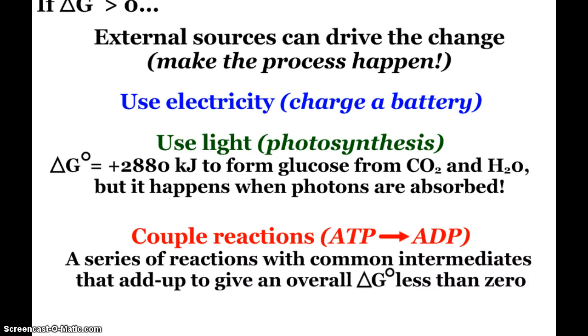Light can also be used. The ΔG for changing glucose to carbon dioxide in water is plus 2,880 kilojoules. So it is definitely not thermodynamically favored. However, when photons are absorbed, specifically in the correct wavelength that is required, photosynthesis happens to a great extent. We know that.